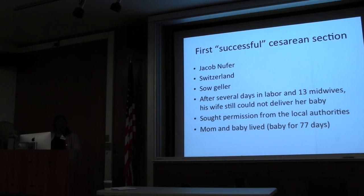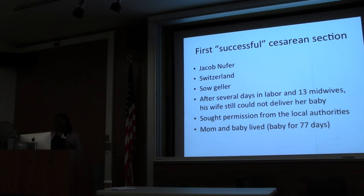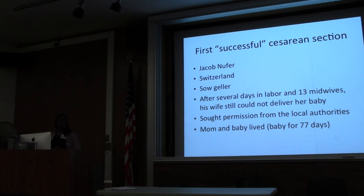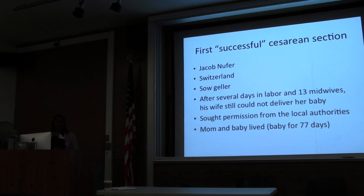The first successful cesarean section in the history books was performed by Jacob Nufer in Switzerland, a sow gelder — probably a veterinarian of some sort with knowledge of anatomy. After his wife was several days in labor with 13 midwives, she still couldn't deliver, so he sought permission from local authorities and delivered the baby by cesarean. The mother lived and supposedly had other children, and the baby lived for 77 days.